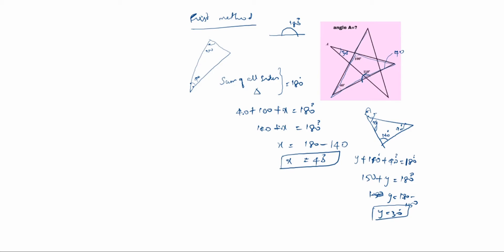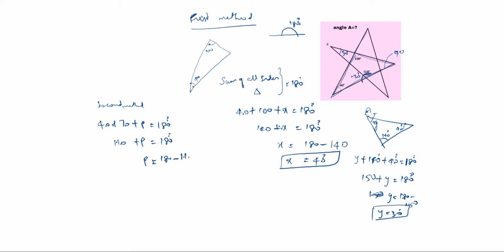This full is 180. We know this is 110, so the remaining value is 70. So you can write this as 70. Now 70 comes, and 40 is there. Using the same formula — sum of all sides is 180 — second method: 40 plus 70 plus p is equal to 180. So 110 plus p is equal to 180. p is equal to 180 minus 110, p is equal to 70.